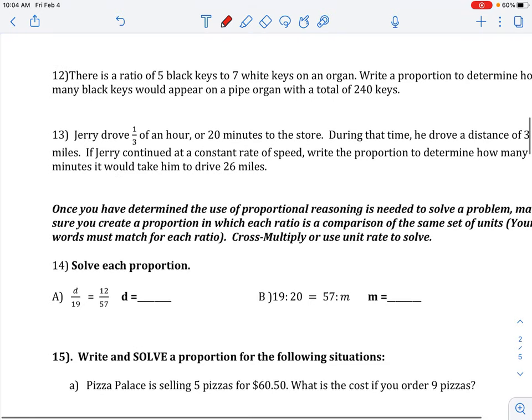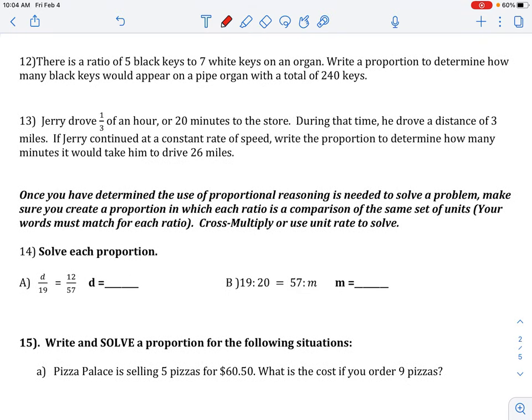Flip to page 2. There's a ratio of 5 black keys to 7 white keys on an organ. Write a proportion to determine how many black keys would appear on a pipe organ with a total, there's an important word, of 240 keys. In this problem, we know we're going to have to total the black keys and the white keys. You have 5 black plus 7 white gives you a total of 12 keys. So we're looking for the number of black keys over total in this problem.